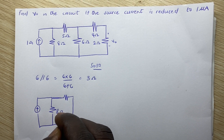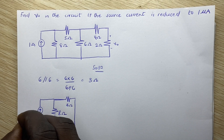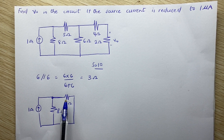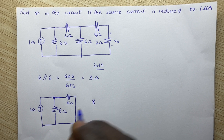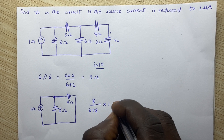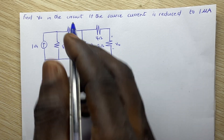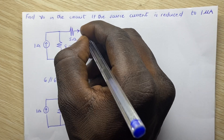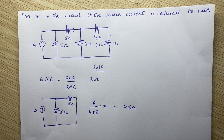We have 8 ohms on one side and the equivalent of the other side is also 8 ohms, with our one amp source. We use the current divider: the opposite branch (8 ohms) divided by the sum of the two branches, multiplied by the one amp source current. This gives us 0.5 amps flowing through this particular branch.